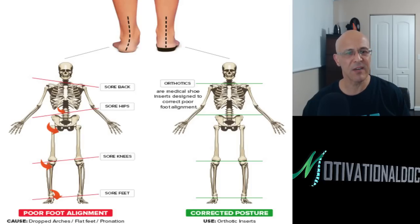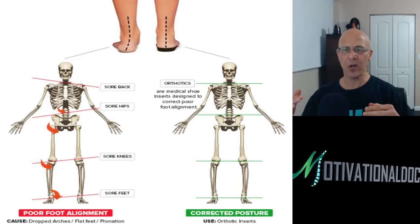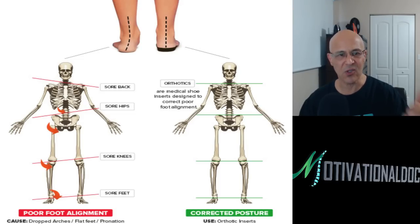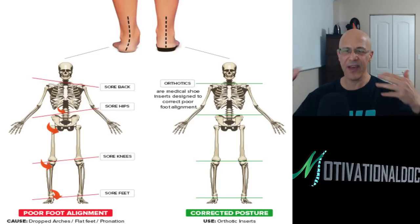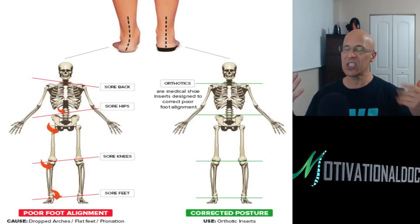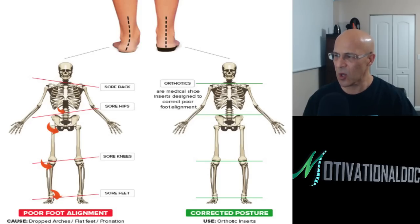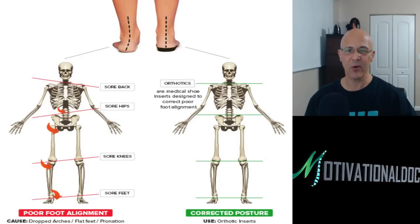If you wear good support under your foot, look how the corrected posture starts to change. When you have poor foot alignment — sore feet, sore knees, sore hips, sore back — it affects your neck and causes degenerative imbalances. This is a real serious condition. No one presents it this way because we don't want to chase symptoms; we want to get to the root causation. Because once you get degeneration, that's it — degeneration doesn't regenerate again.